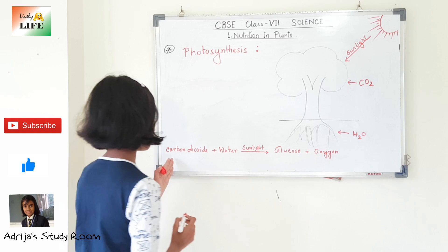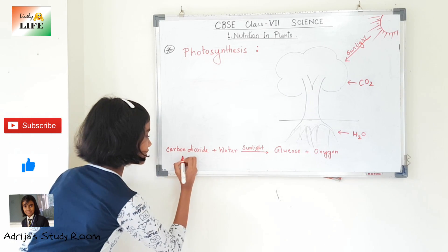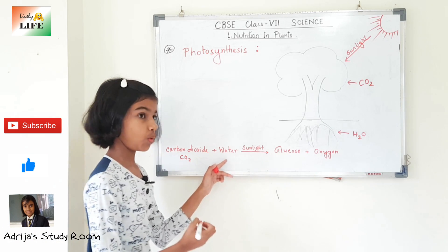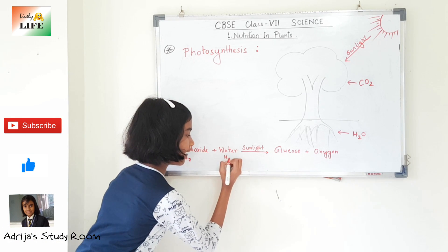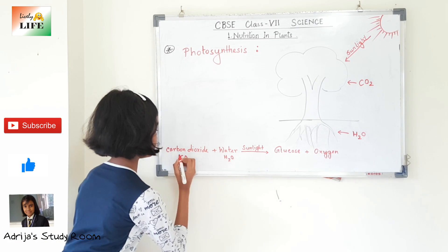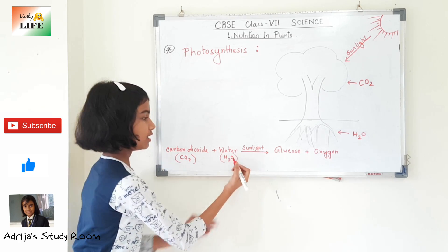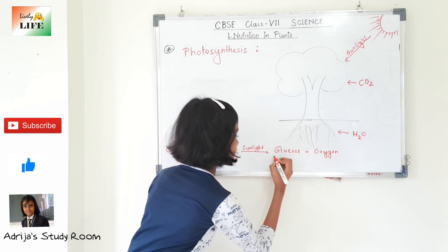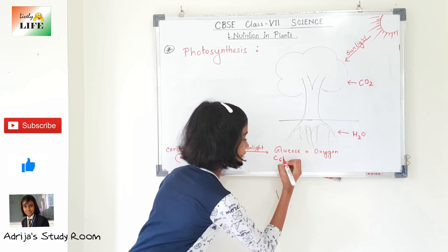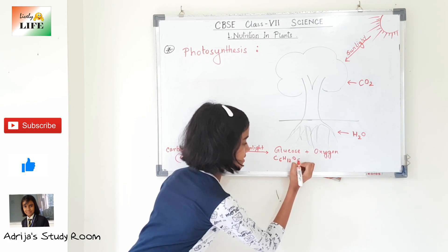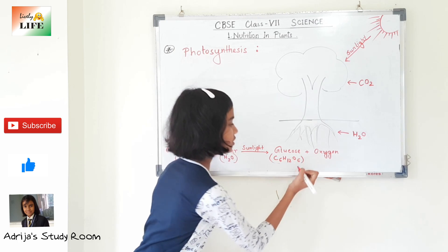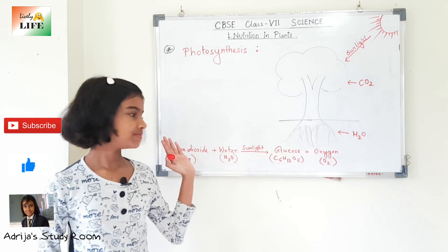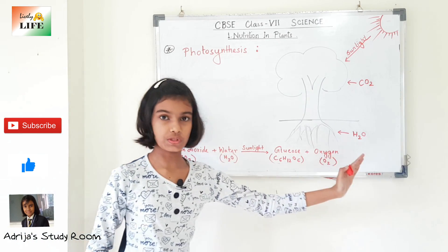This is the equation of photosynthesis: Carbon dioxide (CO₂) plus water (H₂O), in the presence of sunlight, gives glucose (C₆H₁₂O₆) plus oxygen (O₂). This is the equation of photosynthesis.